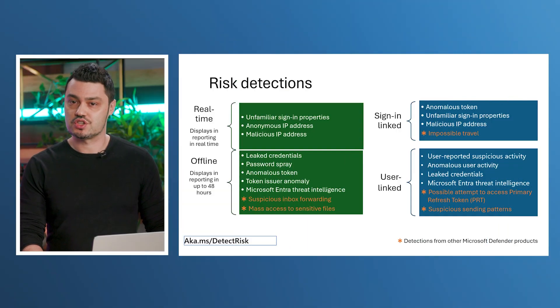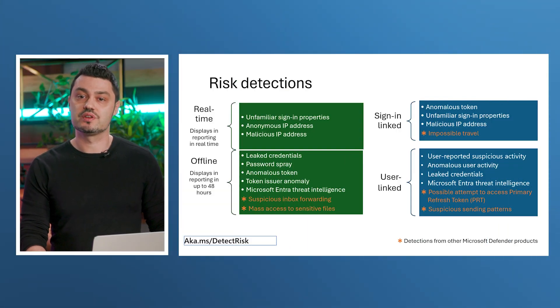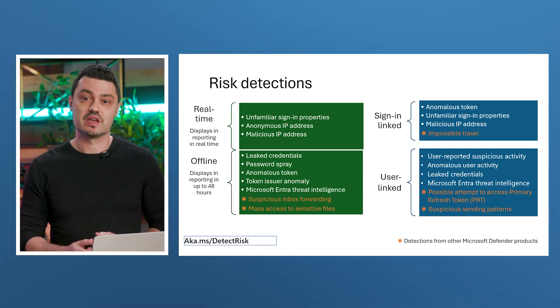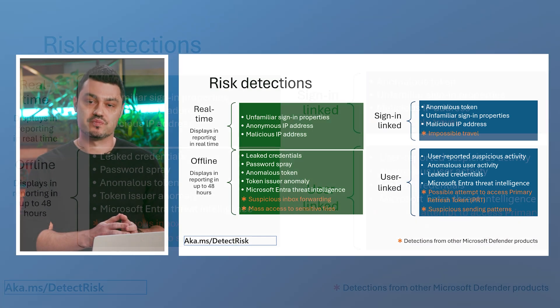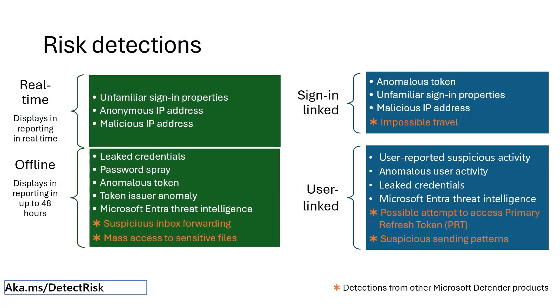Our risk detections are split into several categories. Real-time detections are based on our machine learning models, which run during the time of the sign-in itself. That means the sign-in is assessed as it happens and the risk level is calculated accordingly. If you have conditional access policies in place, then that sign-in can be blocked or remediated before it actually has the chance to succeed.